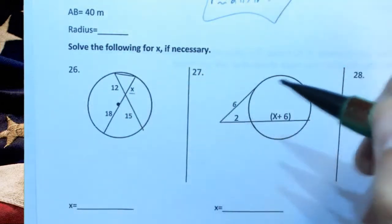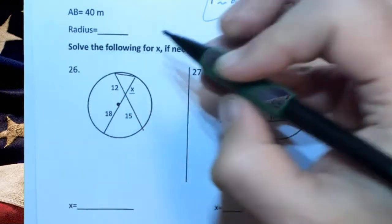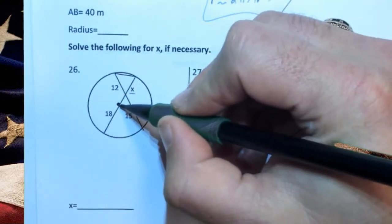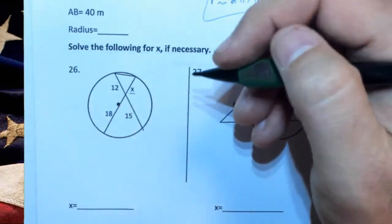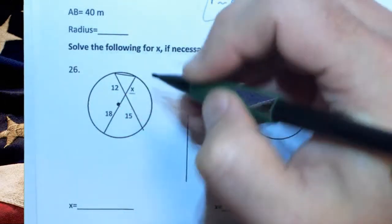It doesn't matter one bit, because when we covered all of these intersecting chords, we never once talked about whether or not it had to pass through the center. We do know that the two pieces of each chord get multiplied by each other.